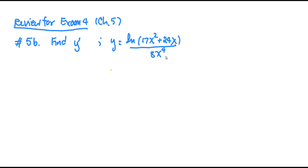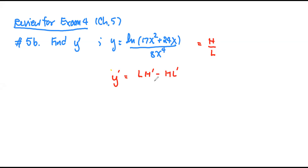I'll go with the way that you got the problem started. If we use the quotient rule, the top is high and the bottom is low. The quotient rule says y' equals low d-high minus high d-low, draw the line, low squared.